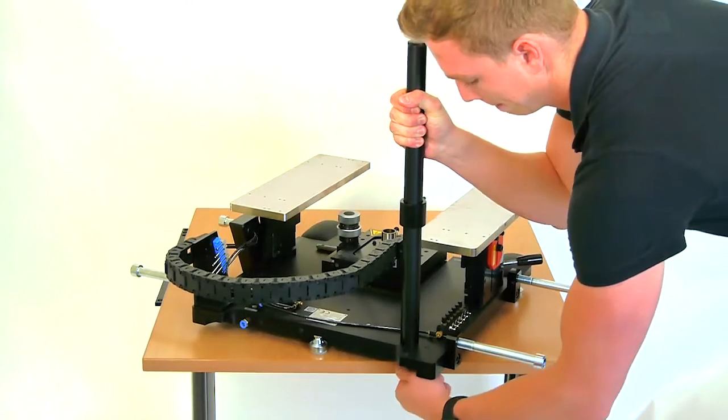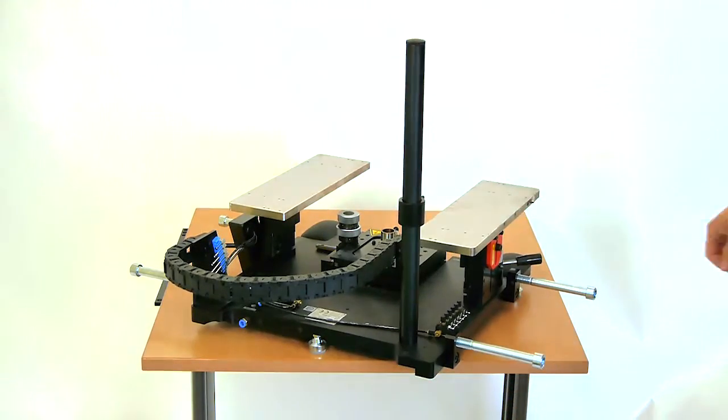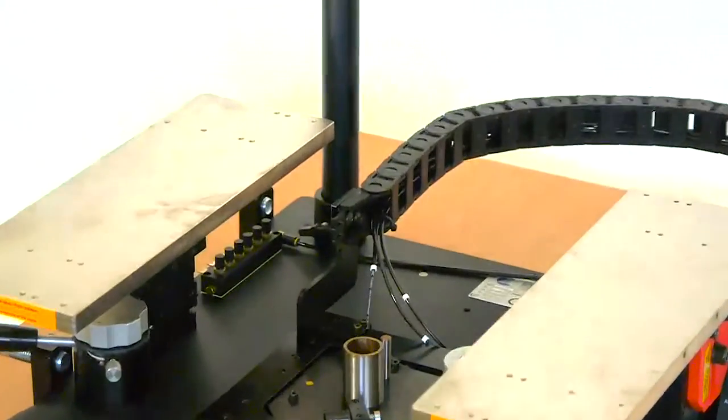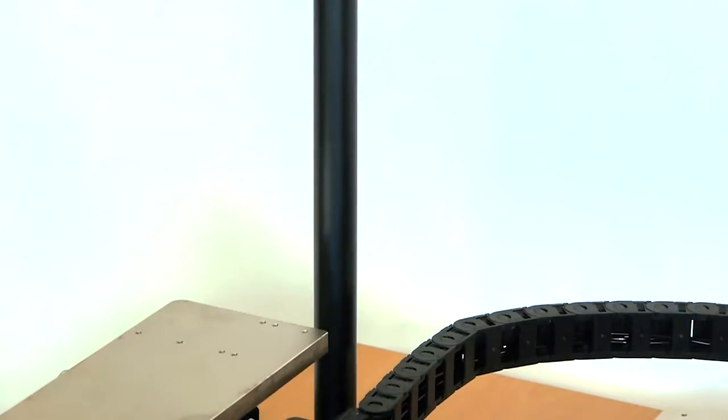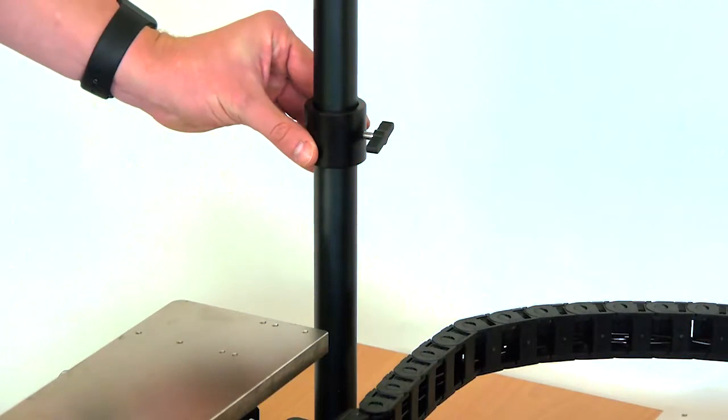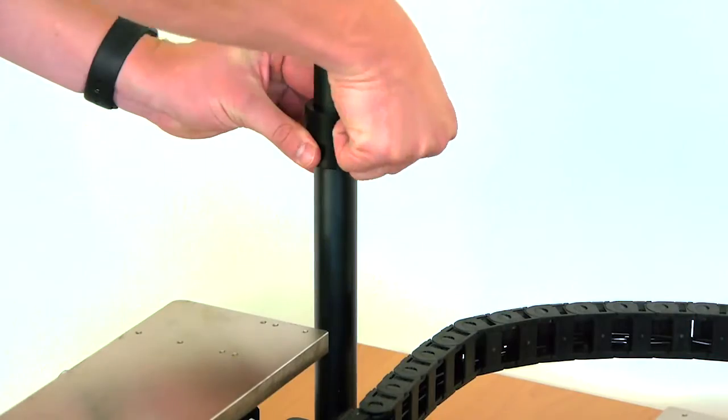After this, lift the system and place it in its final location. Move the clamping collar as shown to the approximate desired set height and tighten with the hand wheel.